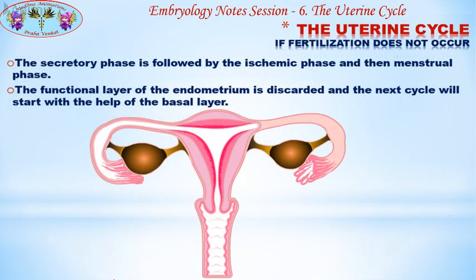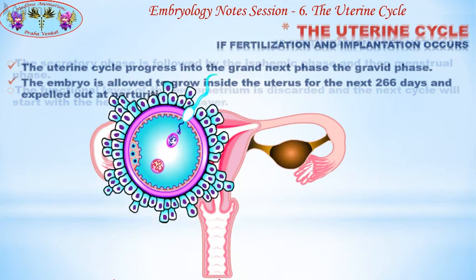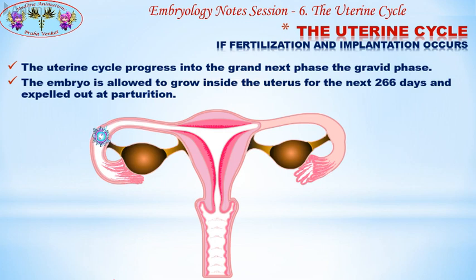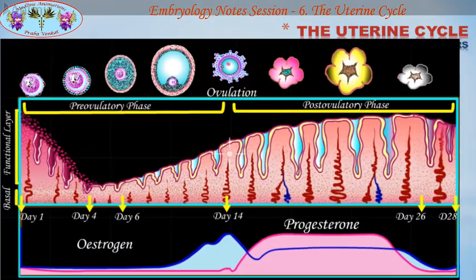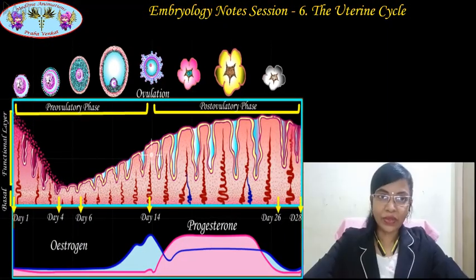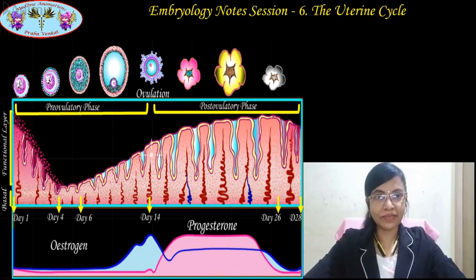If fertilization does not occur, the secretory phase is followed by the ischemic phase and then the menstrual phase. The functional layer of the endometrium is discarded and the next cycle starts with the help of the basal layer. If fertilization and implantation occur, the uterine cycle progresses into the gravid phase, allowing the embryo to grow inside the uterus for the next 266 days and be expelled at parturition. I hope the notes are useful; in the next session I will cover the ovarian cycle.